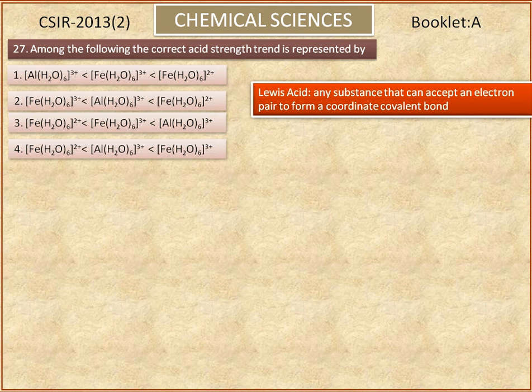A Lewis acid can be defined as any substance that can accept an electron pair to form a coordinate covalent bond.